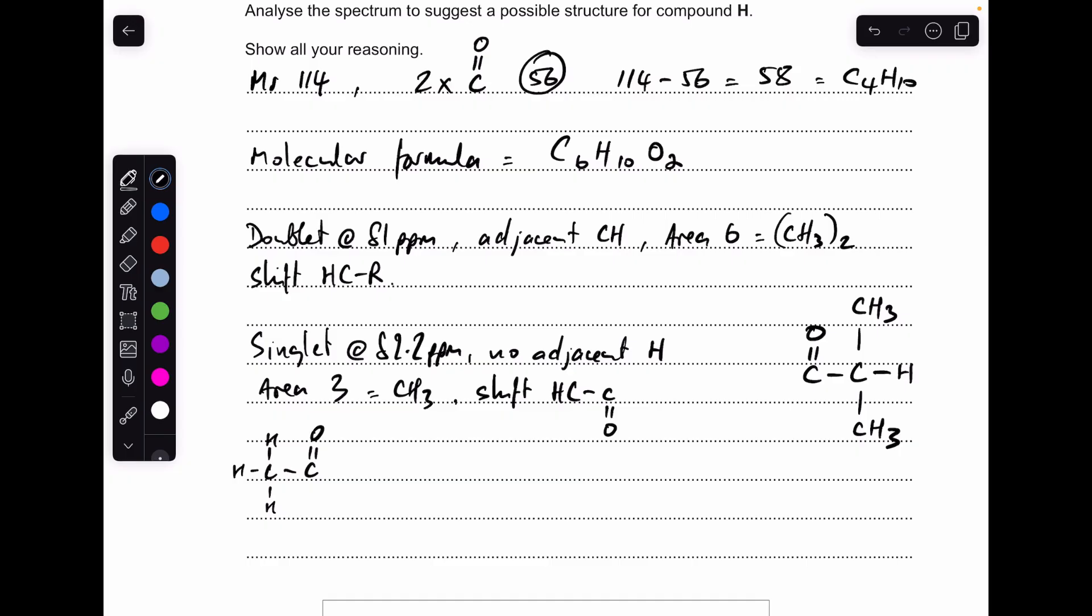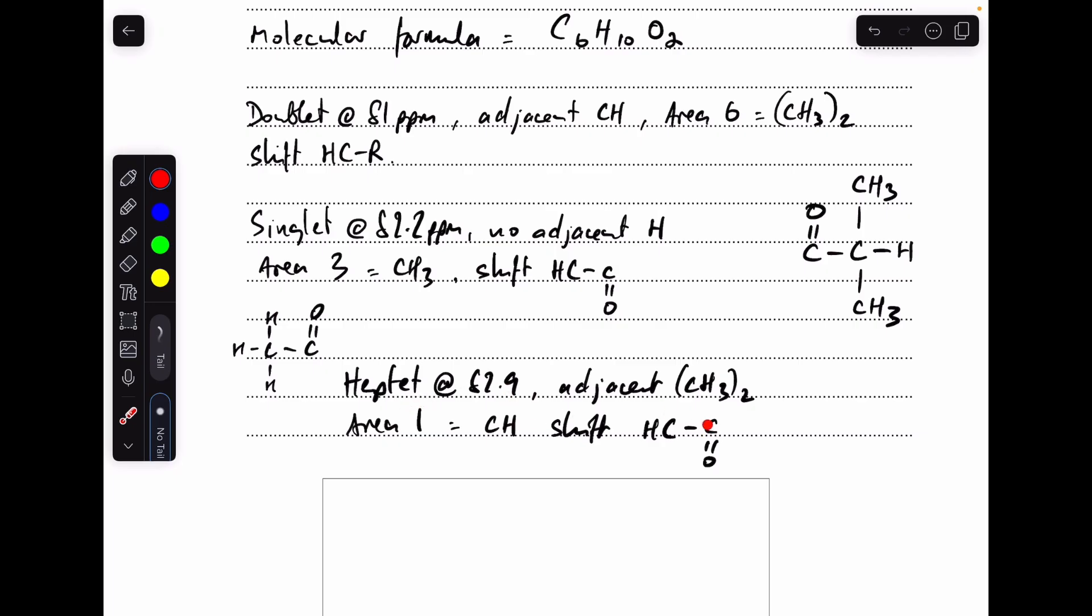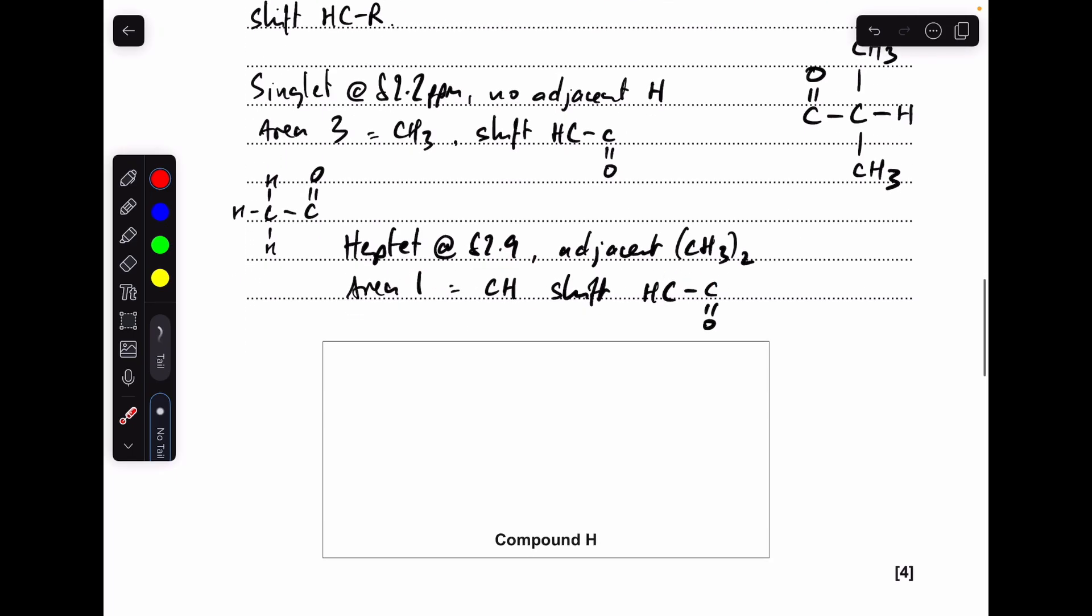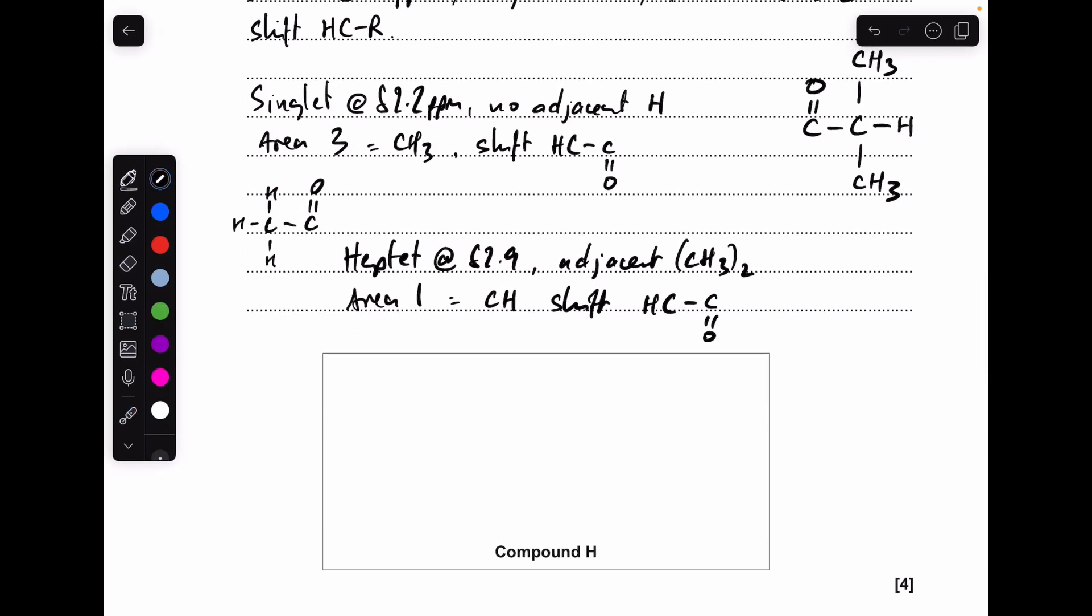I'll just write that up, and then we'll put the two bits together and we've got our structure. All we need to do now is draw out H from what we've got. So it's the CH3 group, C=O, there's that second carbonyl group, and the other feature is this. So well done if you've got that right.